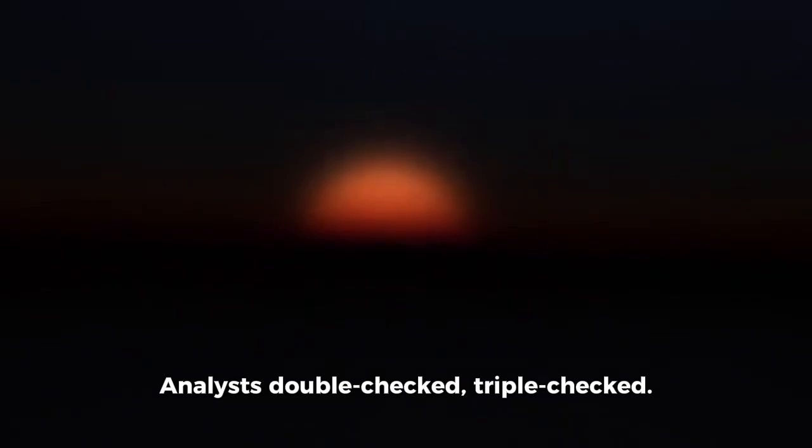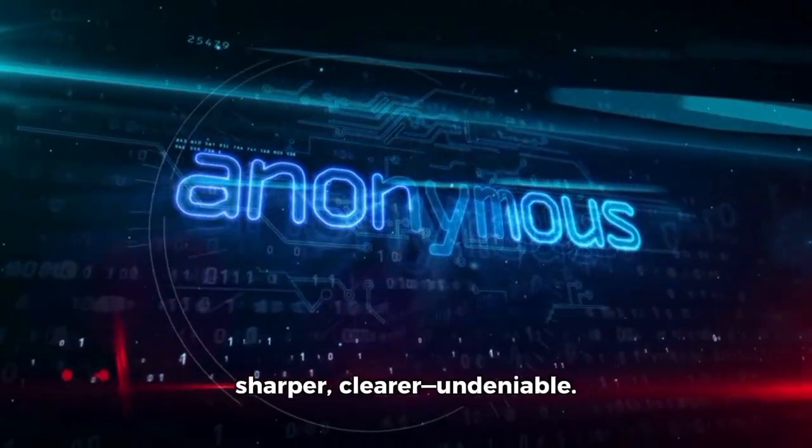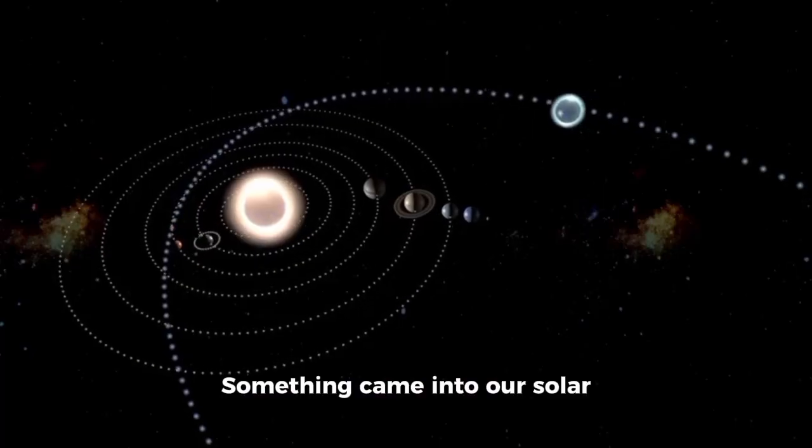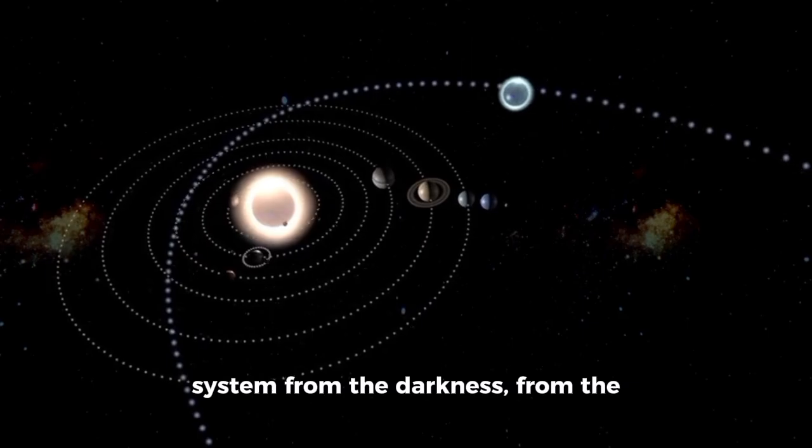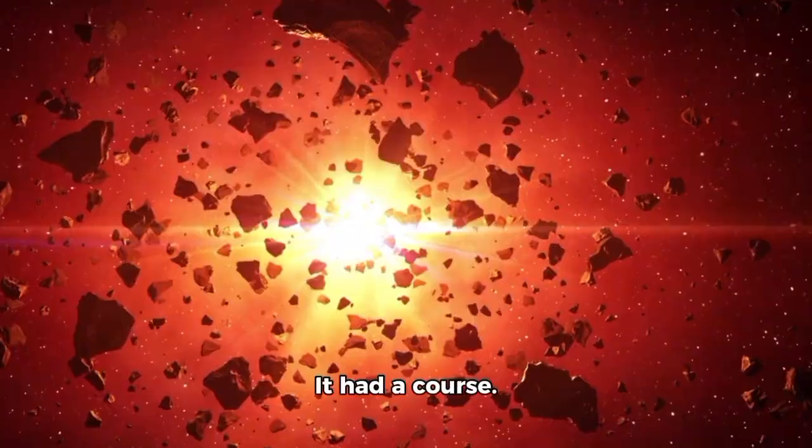Software flagged it as an error. Analysts double-checked, triple-checked, but the anomaly only grew sharper, clearer, and undeniable. Something came into our solar system from the darkness, from the depths of interstellar space. And it wasn't just passing by. It was necessary. It had a course. It was timed well.